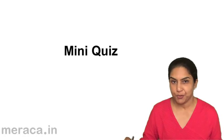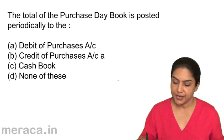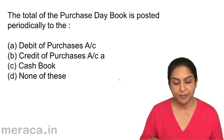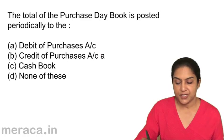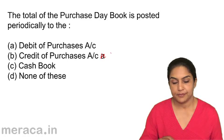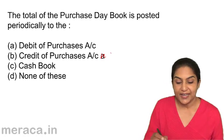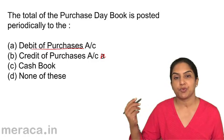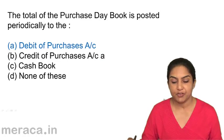Before we move on to the cash book, the total of the purchase day book is posted periodically to: a) debit of purchase account, b) credit of purchase account, c) cash book, or d) none of these. The total of the purchase day book is posted periodically to the debit of the purchase account. Individually, it is posted to the credit of the supplier's account. So, the correct answer is a: debit of purchase account.